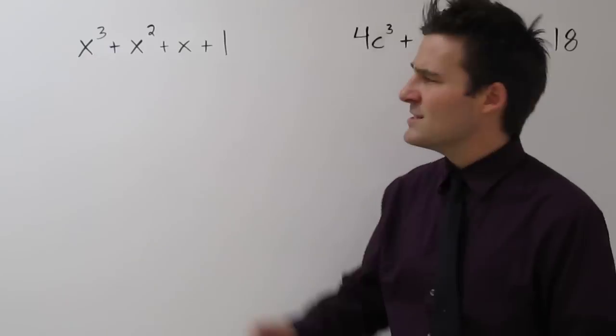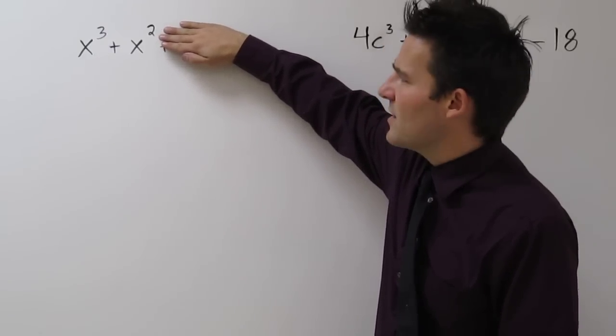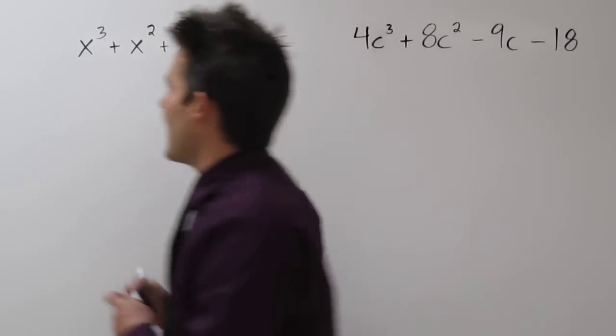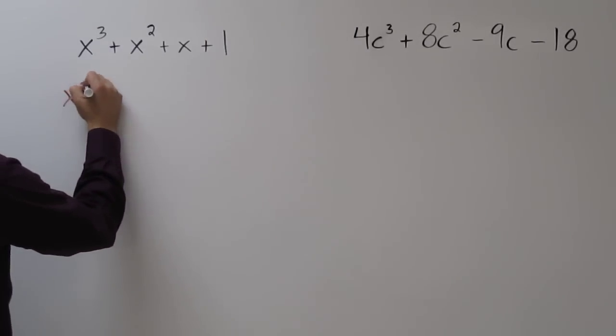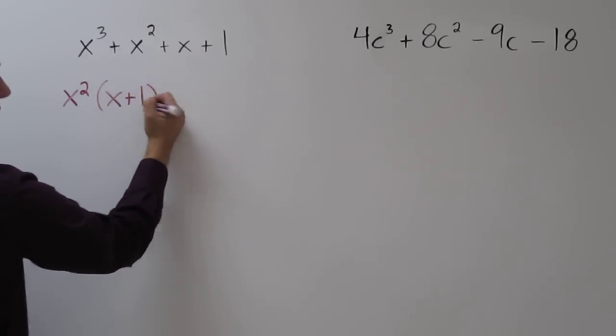So let's just look at x cubed plus x squared. Is there anything we can factor out there? If you said x squared, you're correct. We can factor out an x squared, and we're left with x plus 1.